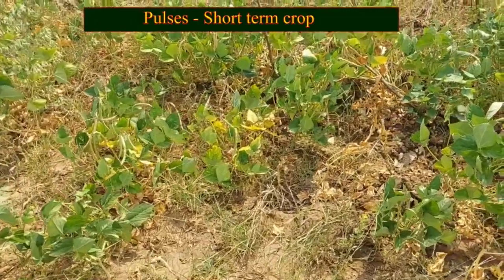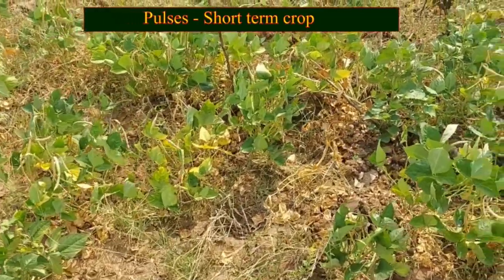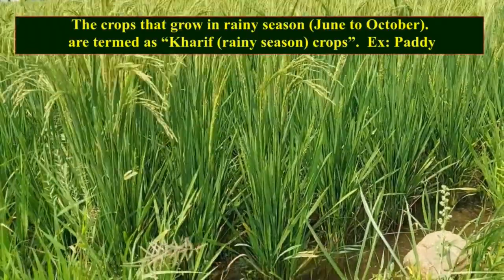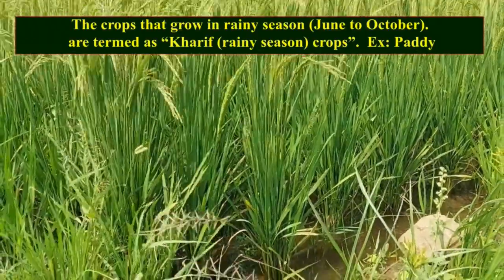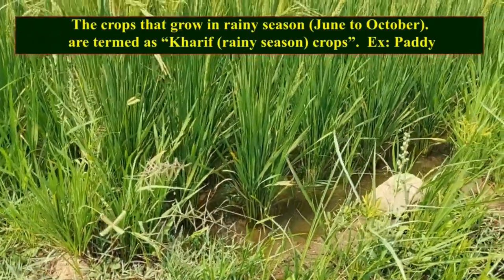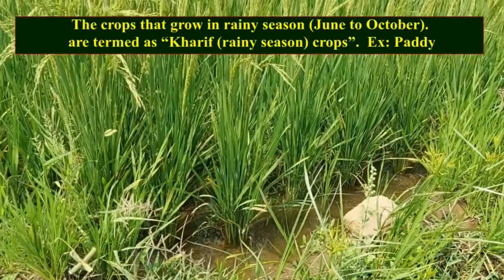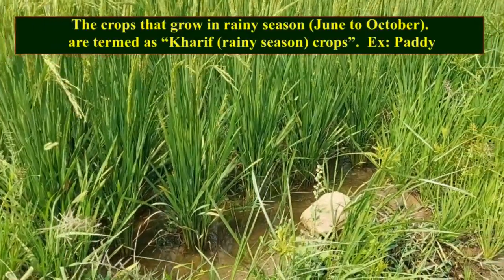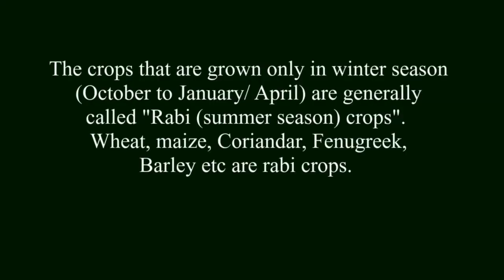This is also one type of short-term crop. The crops that grow in the rainy season are termed as kharif or rainy season crops. The crops that are grown only in winter season are generally called rabi or summer season crops.